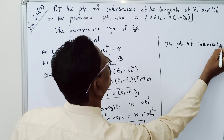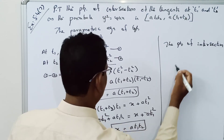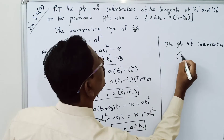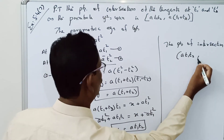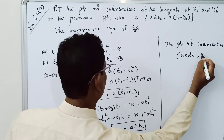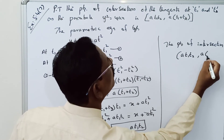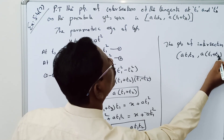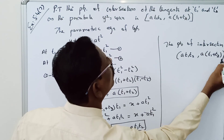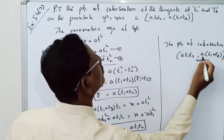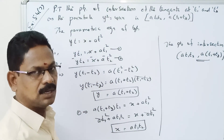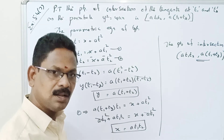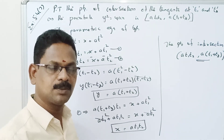Therefore, the point of intersection of the tangents at t1 and t2 on the parabola is: (at₁t₂, a(t₁ + t₂)).